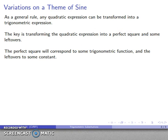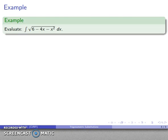This goes back to the general problem of completing the square. In general, our perfect square is going to correspond to our trigonometric functions. The leftovers will be some constant that we'll have to deal with. So let's take a look at this integral, √(6-4x-x²).